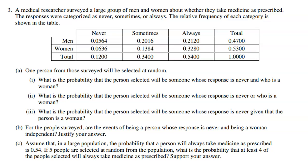The cool thing about this two-way table is it doesn't have counts in it — they never tell us the actual size of the sample. Instead of showing counts, we see proportions. So 47% of the people in the survey were men, 53% were women, 54% said always take their prescription as prescribed, 34% sometimes, and 12% never. For example, 5.64% of the people in the survey were men who never take their medication as prescribed.